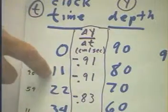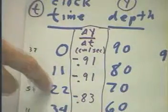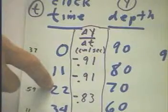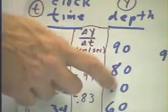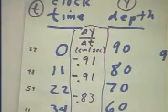Because we again have an 11-second time interval, again from clock time 11 to clock time 22, and as usual a 10-centimeter change in depth.